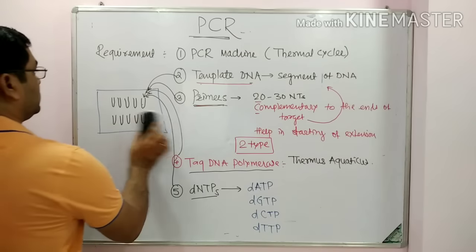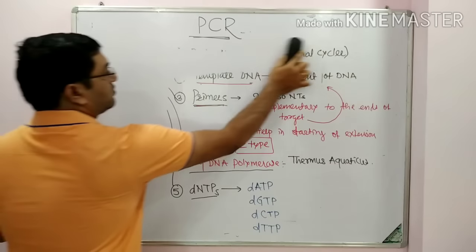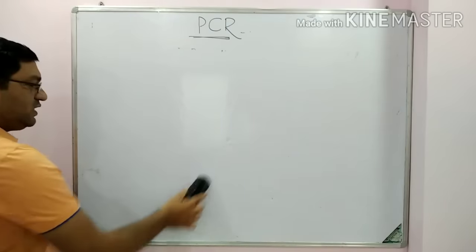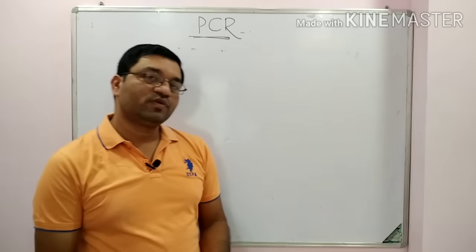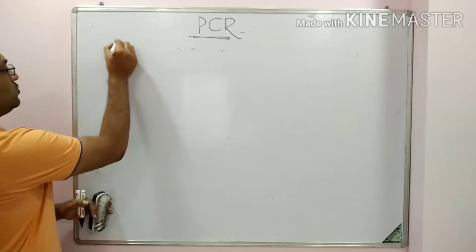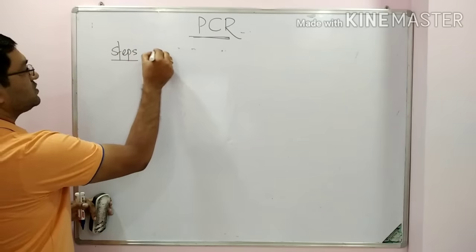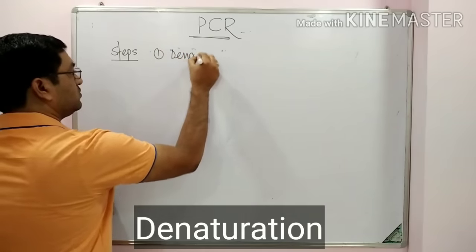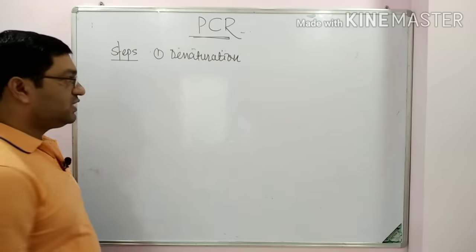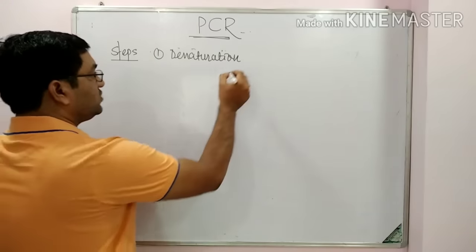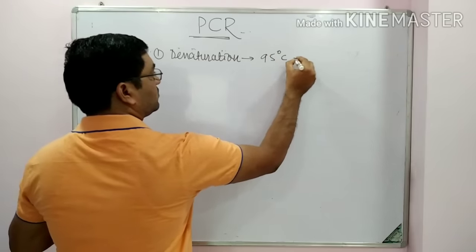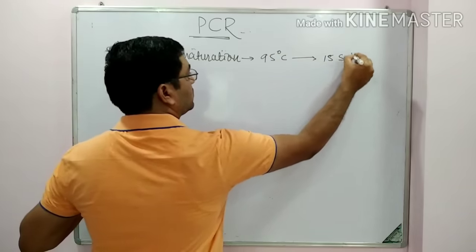Now, the steps in PCR — three basic steps are involved in the PCR technique. It is a molecular Xerox machine, meaning from one copy you will get multiple copies. The first step is denaturation, which is the separation of two strands of DNA when we heat the solution. Denaturation occurs at 95 degrees centigrade and requires 15 seconds to 2 minutes.